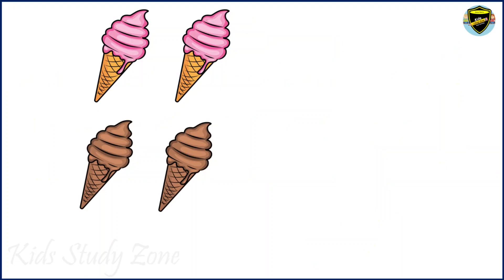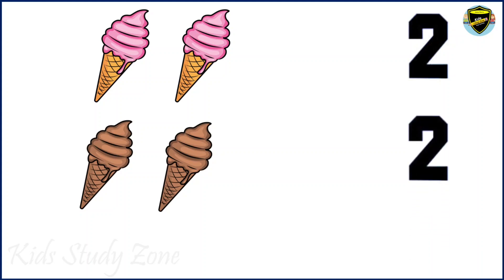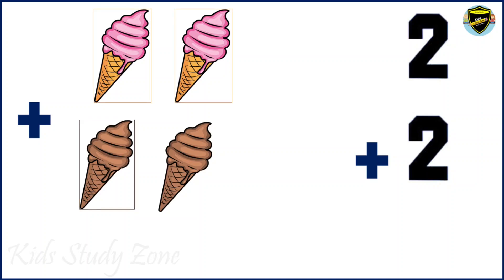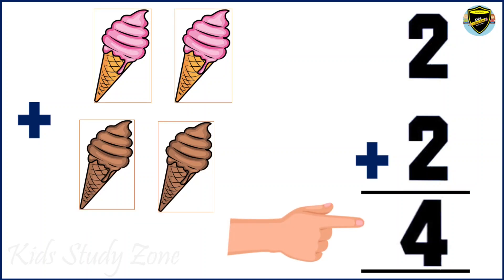Here we have some ice creams. You can see there are strawberry ice creams and there are chocolate ice creams. We need to find the total number of ice creams. So let's count strawberry ice creams: 1, 2. We have 2 strawberry ice creams. Let's count the chocolate ice creams: 1, 2. We have 2 chocolate ice creams. So we will write 2. The sign of addition is plus. Now we need to add this: 1, 2, 3, 4. There are total 4 ice creams.